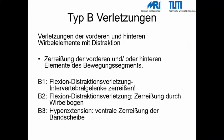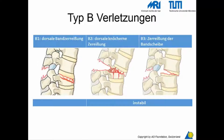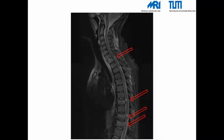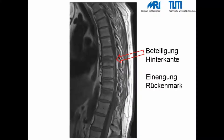Typ B Verletzungen sind charakterisiert durch Verletzungen der vorderen und hinteren Wirbelelemente. B1 bezeichnet eine Zerreißung der Intervertebralgelenke, B2 eine Zerreißung durch den Wirbelbogen und B3 eine ventrale Zerreißung der Bandscheibe. Diese Kernspintomographie zeigt eine typische B-Verletzung der Wirbelsäule mit Zerreißung sowohl der ventralen wie dorsalen Strukturen. Diese Computertomographie zeigt die Beteiligung der Hinterkante – eine solche Verletzung geht mit einer Gefahr für das Rückenmark einher, da dieses durch knöcherne Strukturen eingeengt werden kann.